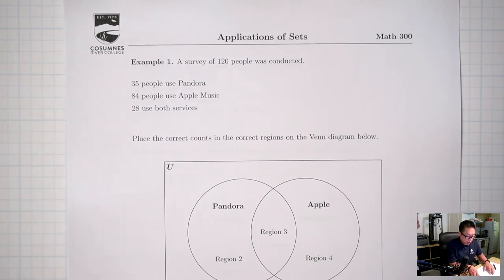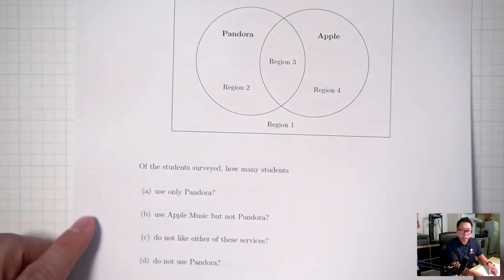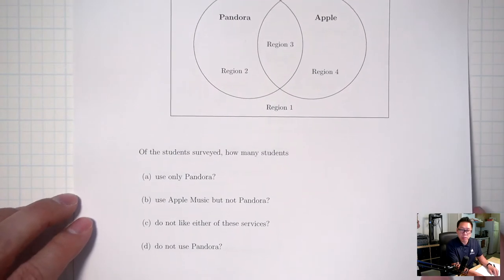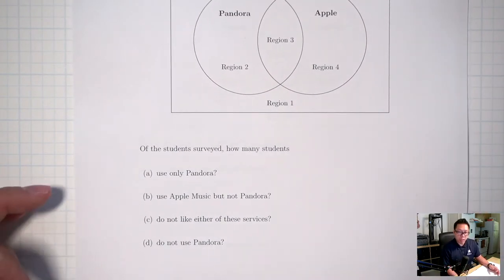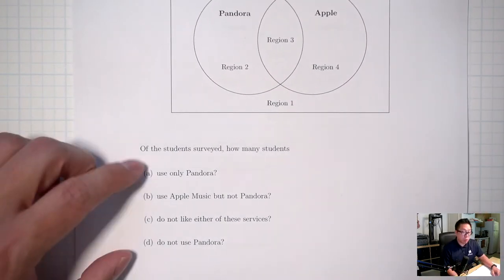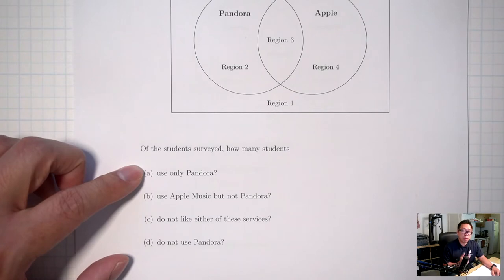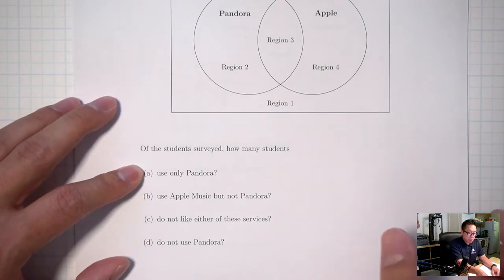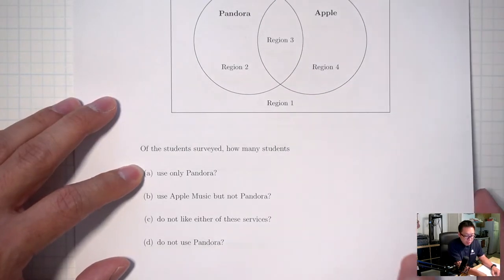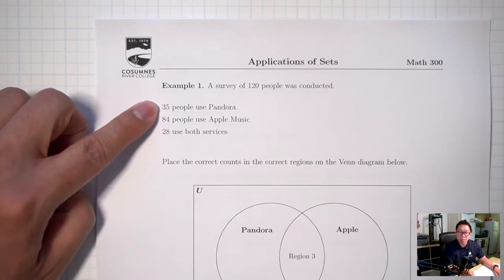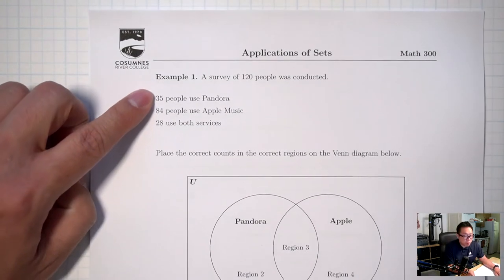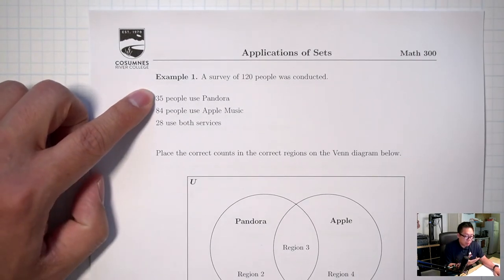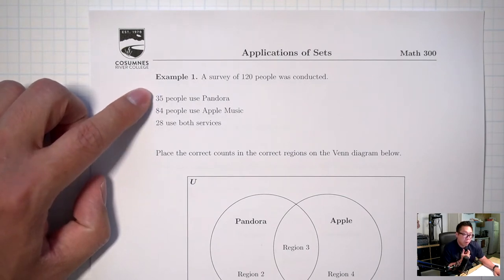Let me jump to the end here and see what types of questions we're trying to answer. Of the students surveyed, how many students use only Pandora? This is asking about how many people use just the one service Pandora. This is not as simple as just saying 35, because 35 includes people who use both services. So the answer is not going to be just 35.